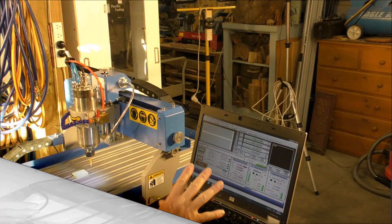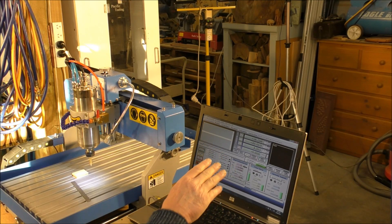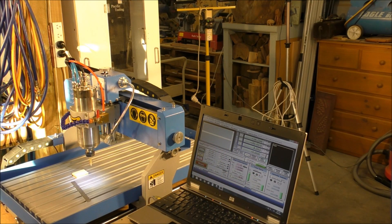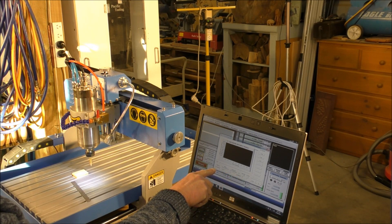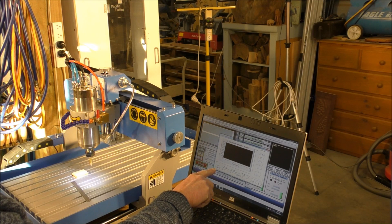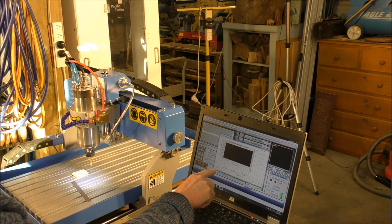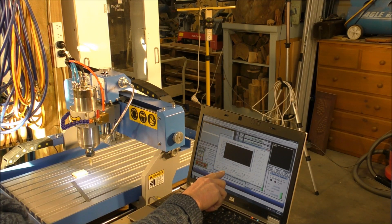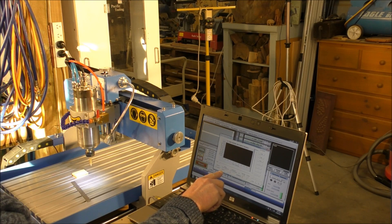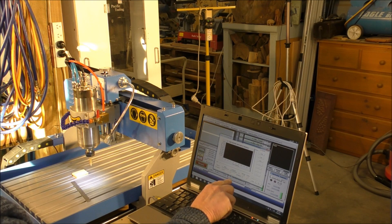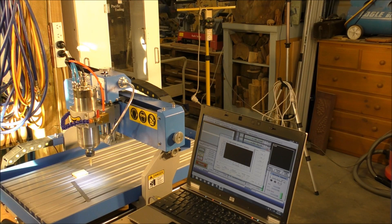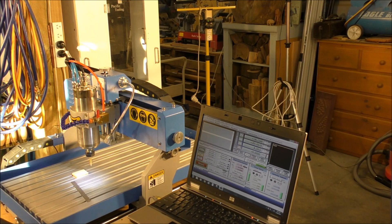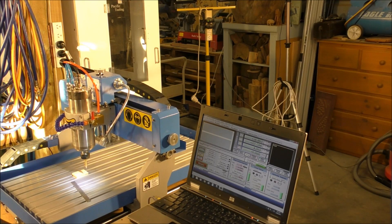Okay, so after you've loaded Mach 3 and you've put all the drivers in, you need to go into Config and Motor Tuning. Now in these little boxes down here you put in, this one here, steps per 322.58. This one here for velocity, put in 250. And this one here for acceleration, put 4. Now you do that for the three axes. Okay, now that is enough to get you going.